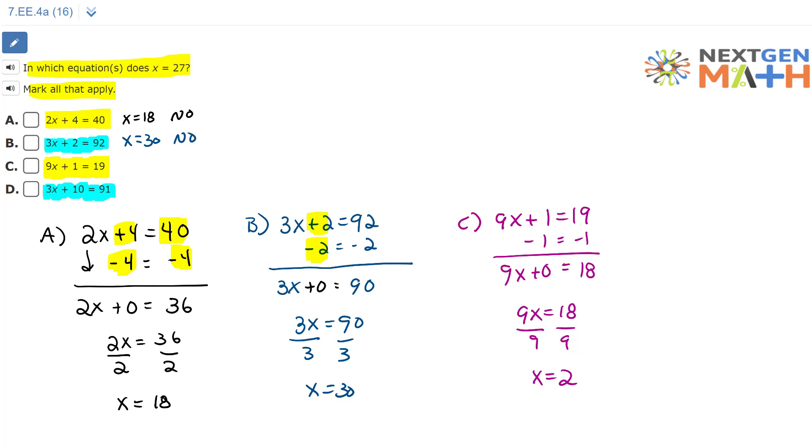For D, 3x plus 10 equals 91. So here's D, 3x plus 10 equals 91.